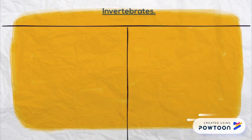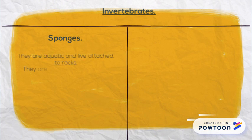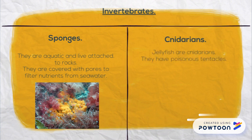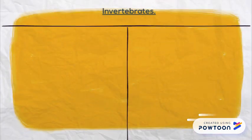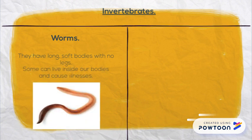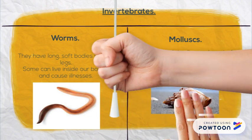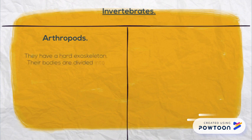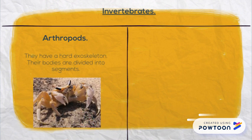Groups of invertebrates. Sponges — they are aquatic and live attached to rocks. They are covered with pores to filter nutrients from seawater. Cnidarians — jellyfish are cnidarians and they have poisonous tentacles. Worms — they have long, soft bodies with no legs, and some can live inside our bodies and cause illnesses. Molluscs — they have soft bodies and most of them have a shell. And finally, arthropods — they have a hard exoskeleton and their bodies are divided into segments. Inside arthropods, we can find insects, spiders, crabs and centipedes.